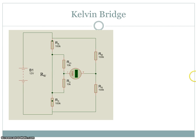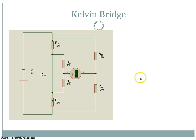The Kelvin bridge is a modified version of the Wheatstone bridge. It has a couple of additional resistors, and for the basis of this analysis we're going to consider this wire here as having a resistance Rw.